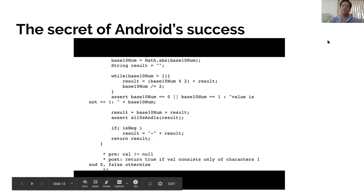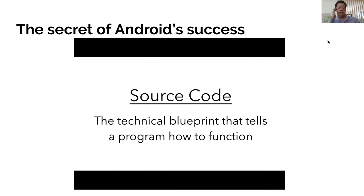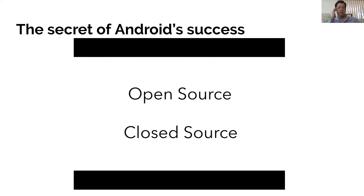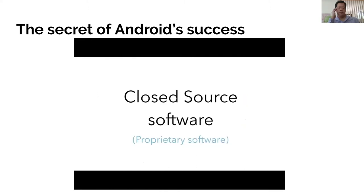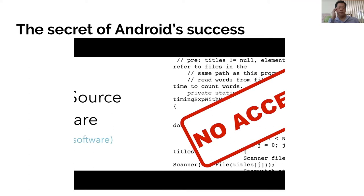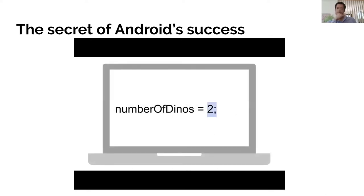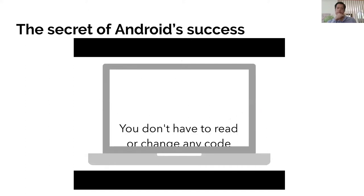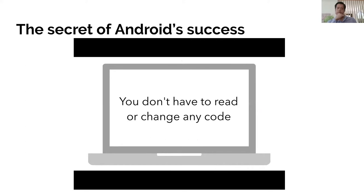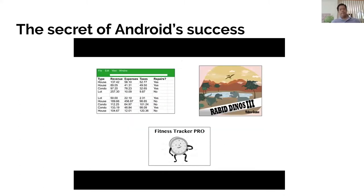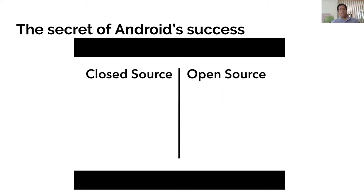Almost every piece of computer software is created using source code — the technical blueprint that tells a program how to function. When creators release their product, they must decide whether to make it open source or closed source. With closed source software, also known as proprietary software, the public is not given access to the source code and can't see or modify it. With open source software, the source code is publicly available and programmers can see or modify it. You don't have to read or change any code to use an open source product. Open source alternatives include LibreOffice, Linux operating systems, the Firefox browser, and the WordPress blogging platform.